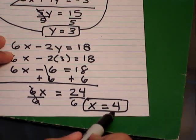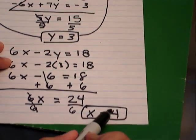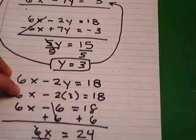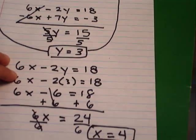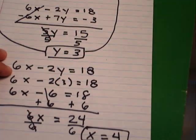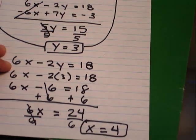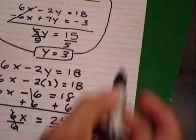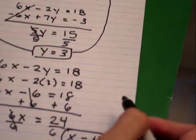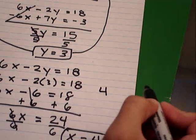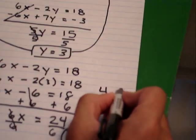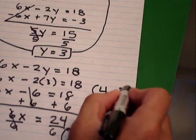So x is 4 and y is 3 — those are the answers for this system of linear equations using the elimination method. When you write the coordinates, make sure you write it as (4, 3). That's the answer. Let's do the next example.